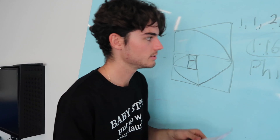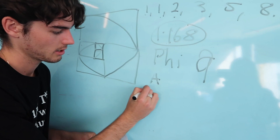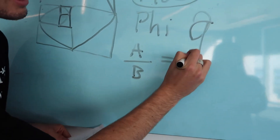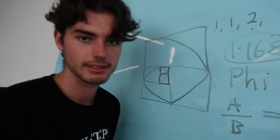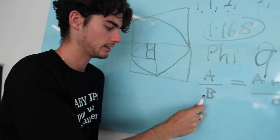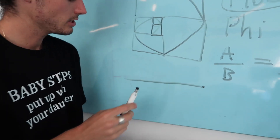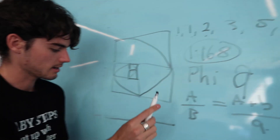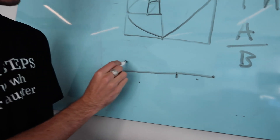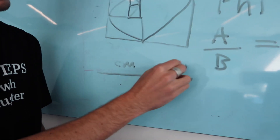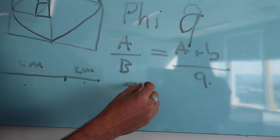Another way to find phi is using this formula: A over B is equal to A plus B over A. A and B are lengths — A is the shorter length and B is the longer length. The ratio 1.68 falls somewhere here, so this is the shorter length and this is the longer length. If we find the centimeters of each of these lengths and put them into the equation, we'll be able to find the golden ratio.